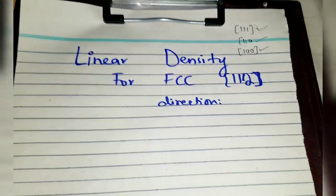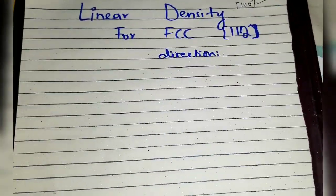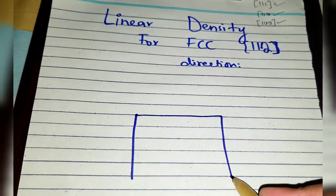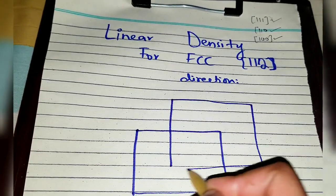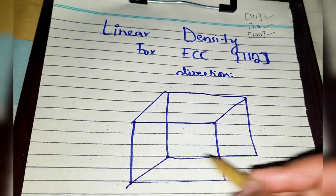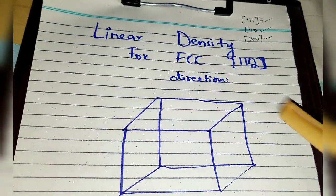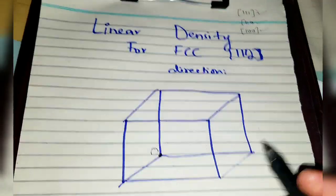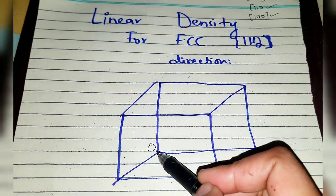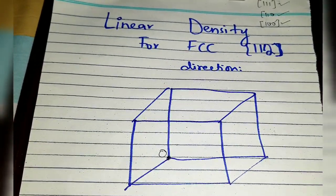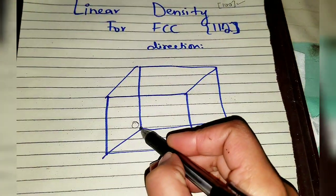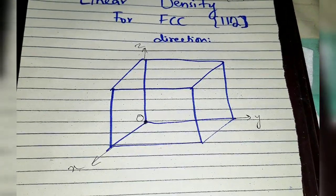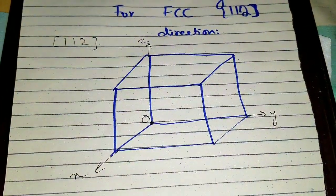Let's get started. First of all, we have to draw the lattice — this is the first step in finding the linear density, because you have to visualize what kind of direction it is and which atoms are being intersected by this line. You have to draw the direction. This is the unit cell with that point as origin. If all of the Miller indices are positive, you take this point as origin. This is the x-axis, y-axis, and z-axis — you have to define the coordinate system.